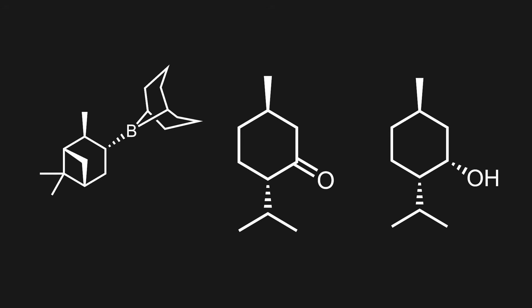Anyhow, we see that the alpine borane reduces ketones to alcohols and favors either the R or S configuration on the chiral center, depending on which enantiomer of pinene is used.